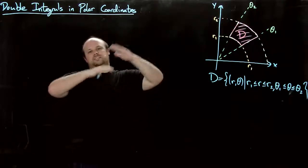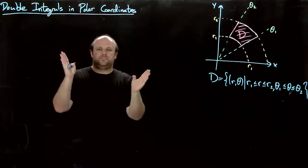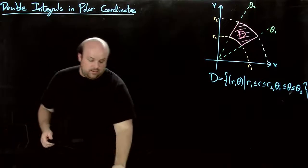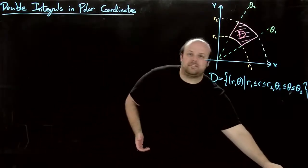So that's the most general polar rectangle possible. It's not the full radius, it's not the full 2 pi. So what do we need to do with this?